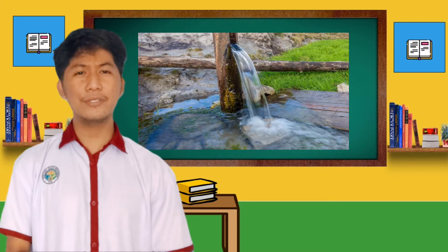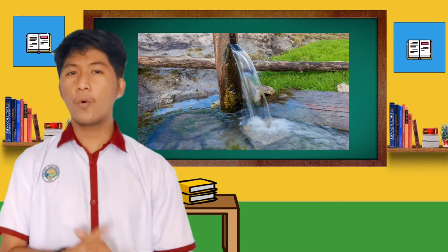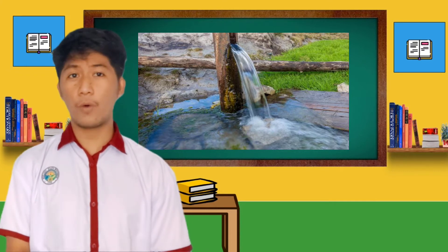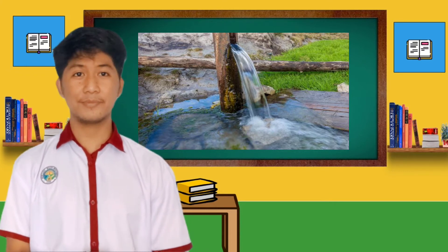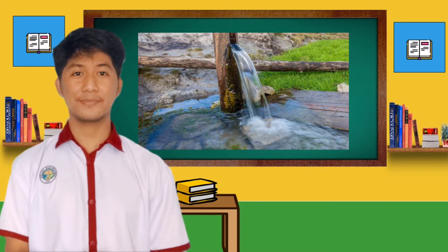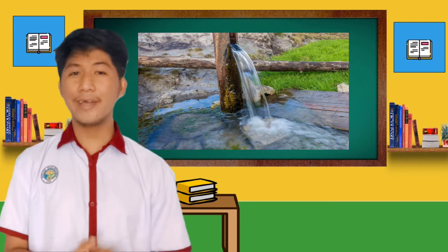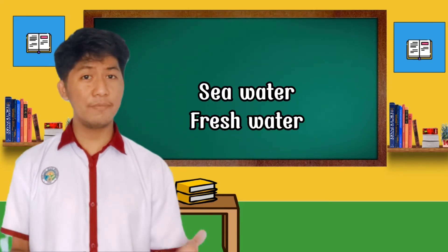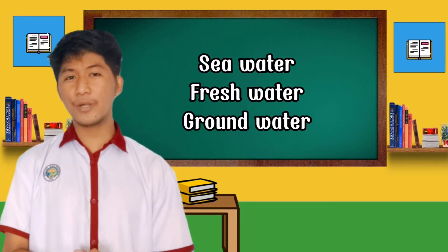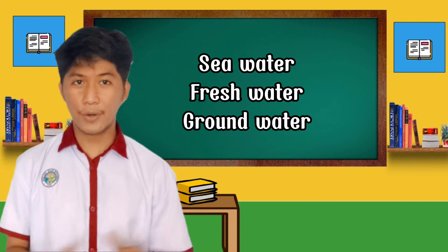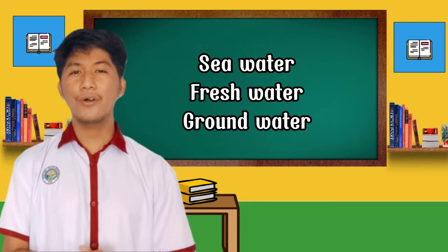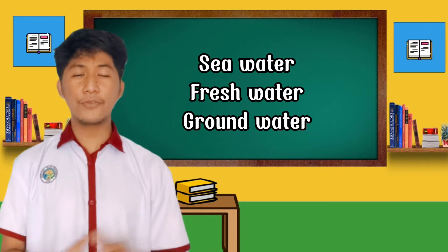Okay, very good. So again, what are the three main sources of water? Alright, these are the sea water, fresh water, and the groundwater. So, are those clear to everyone?